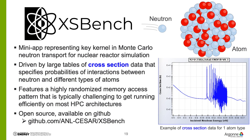The second mini-app we looked at is XSBench, a mini-app representing the key kernel in Monte Carlo neutron transport for nuclear reactor simulation. It is driven by large tables of cross-section data that specify the probabilities of interactions between neutrons and different types of atoms. This features highly randomized memory access, which is very difficult to run efficiently on most HPC architectures. Like all our benchmarks, it is open source and available on GitHub.